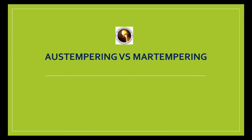Hello everyone. Today we are going to discuss the difference between austempering and martempering heat treatment processes. These two heat treatment processes are special kinds of hardening heat treatment processes.